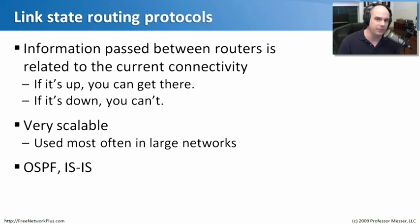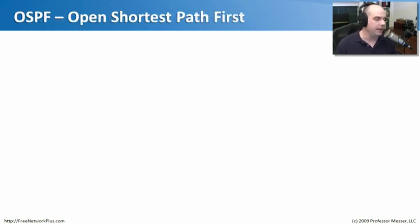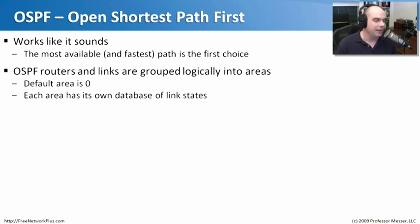There are two link state routing protocols we need to know for the Network Plus exam: OSPF and ISIS. OSPF stands for Open Shortest Path First — if a link is open and it's the shortest way to get there, that's where we go. The idea behind it is that we're grouping our networks into areas, which are pockets of networks, and we route between each one of those pockets.